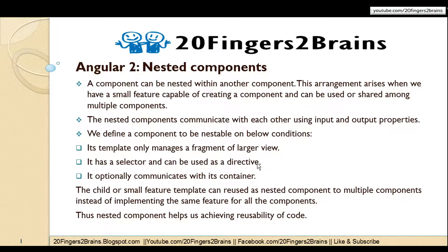The child or small feature template can be reused as a nested component in multiple components instead of implementing the same feature for all components. Thus nested components help us achieve code reusability. For example, if you have an application with three components that all require the same code, instead of implementing that code in all three, you can create a nested component and refer to it in all three.